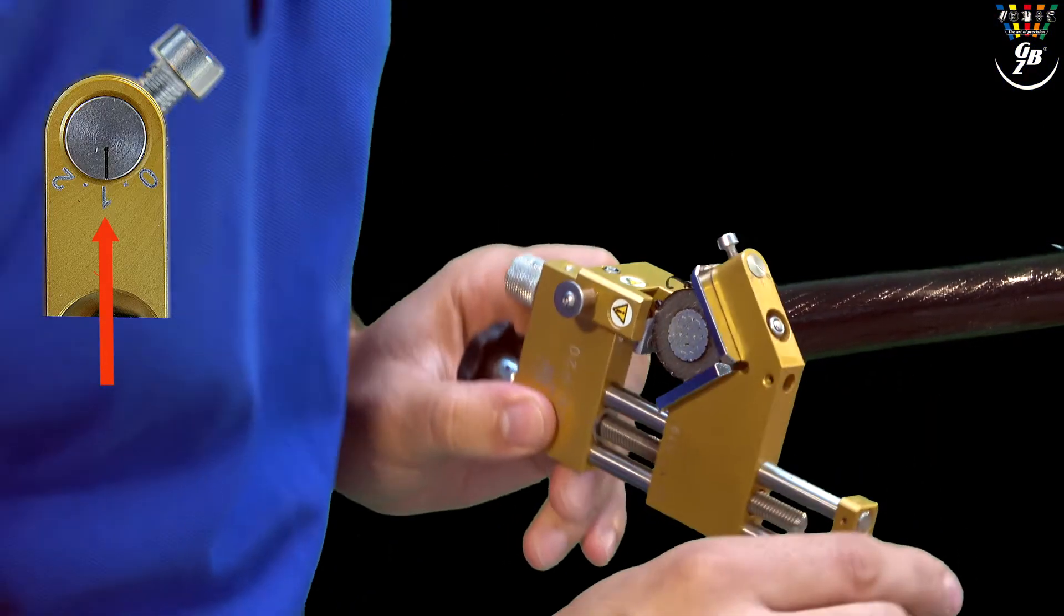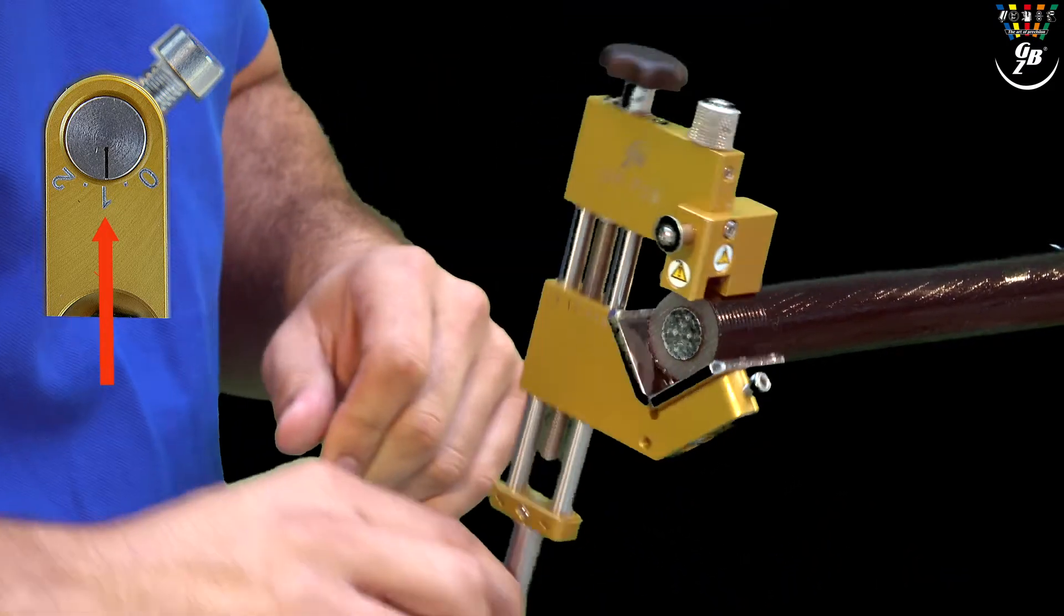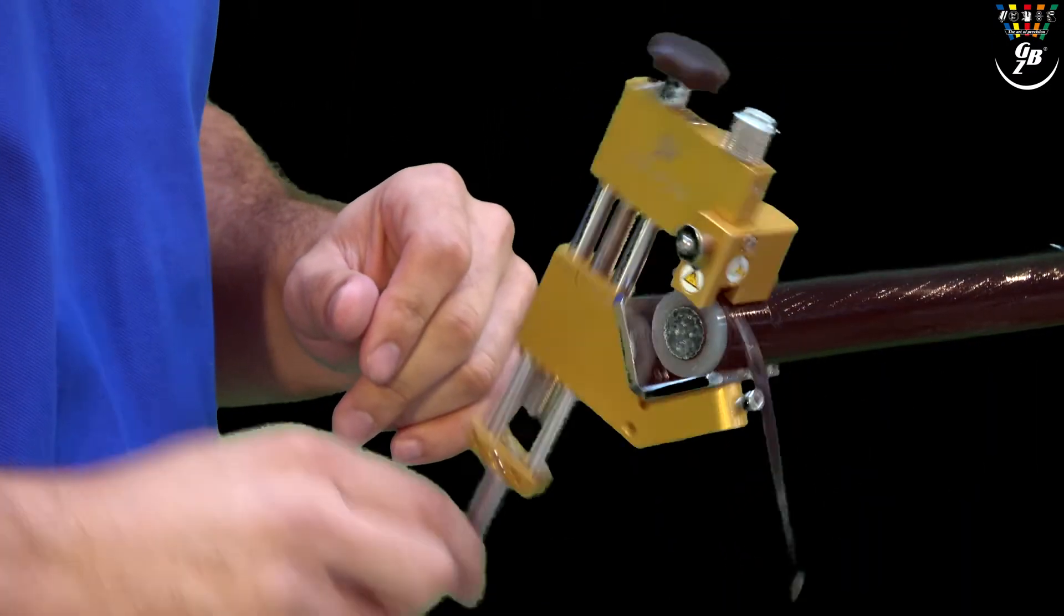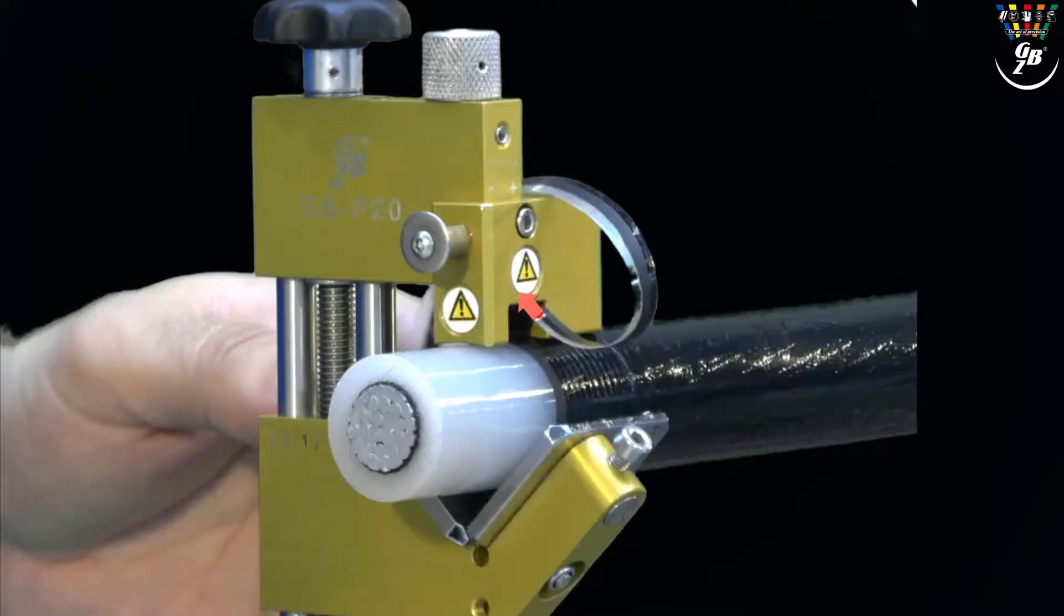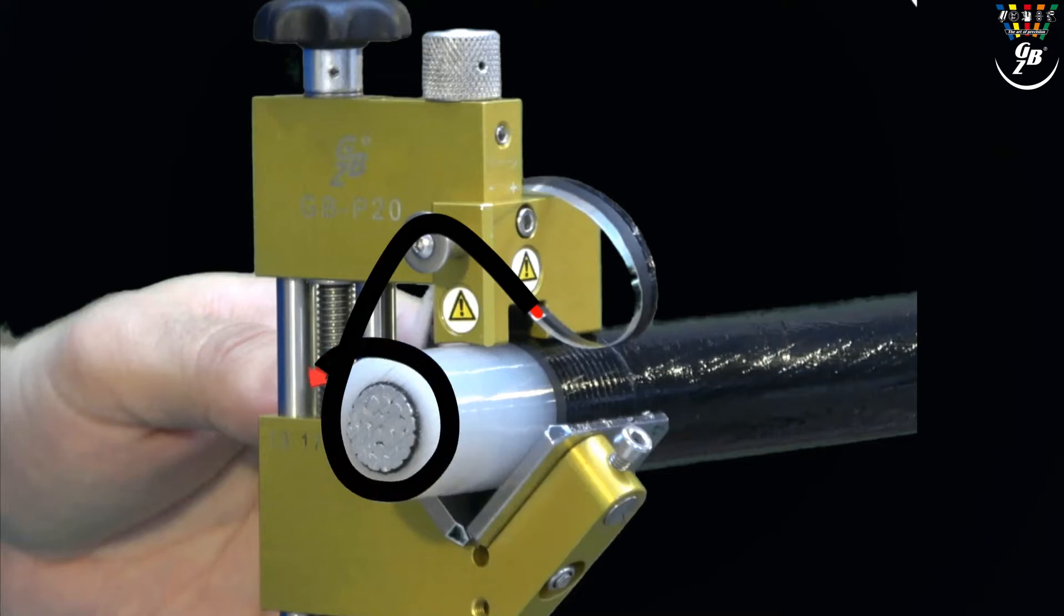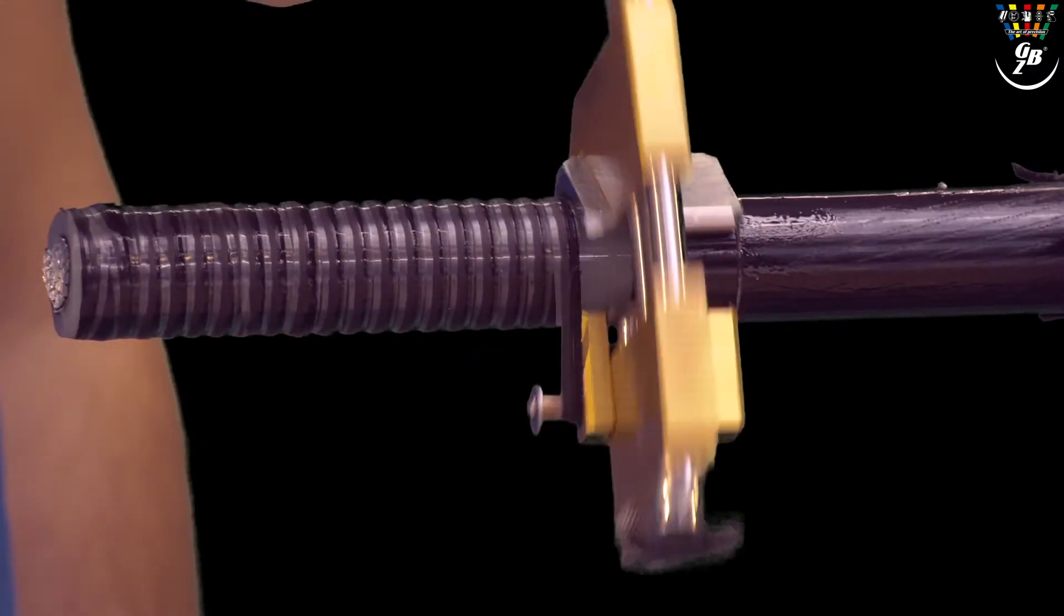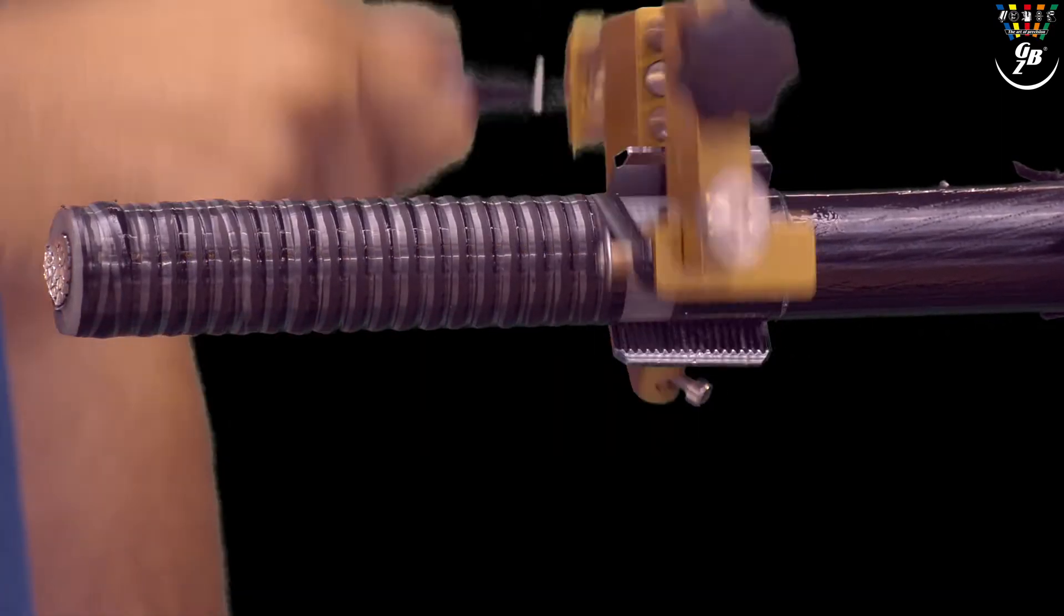From five possible feed settings we set to 1 for our needs. After 3 to 5 revolutions the chip can be put over the guiding pin and the end of the chip can be put through. Now the chip winds itself on the cable and so it is not disturbing.